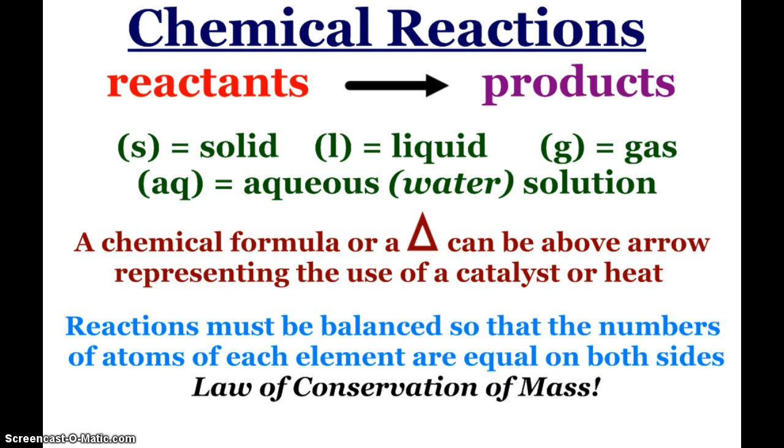And then, of course, we balance our chemical reactions so that we have the same number of atoms of each element on both sides, reactants and products, because of our law of conservation of mass.